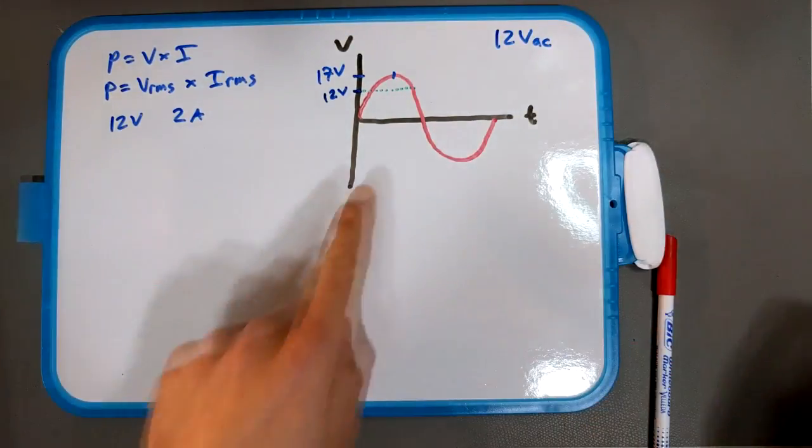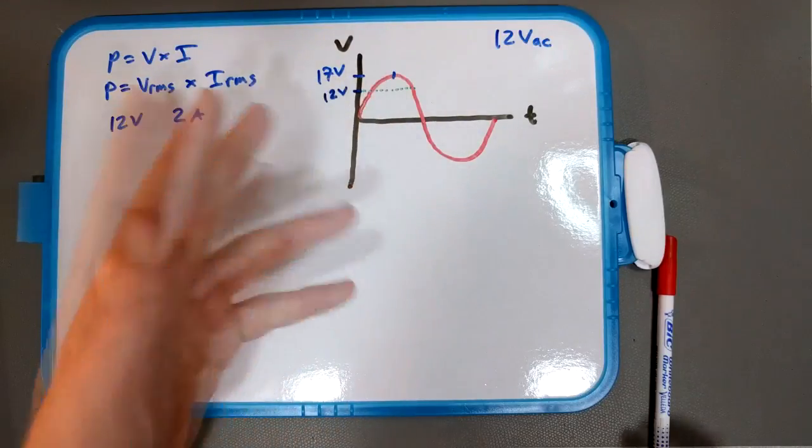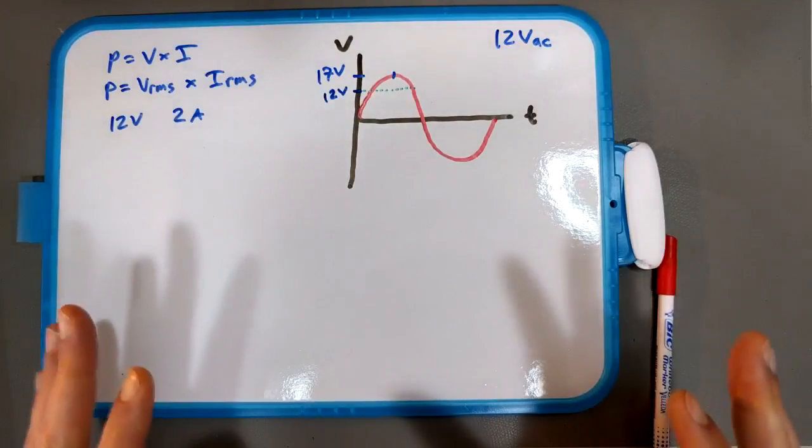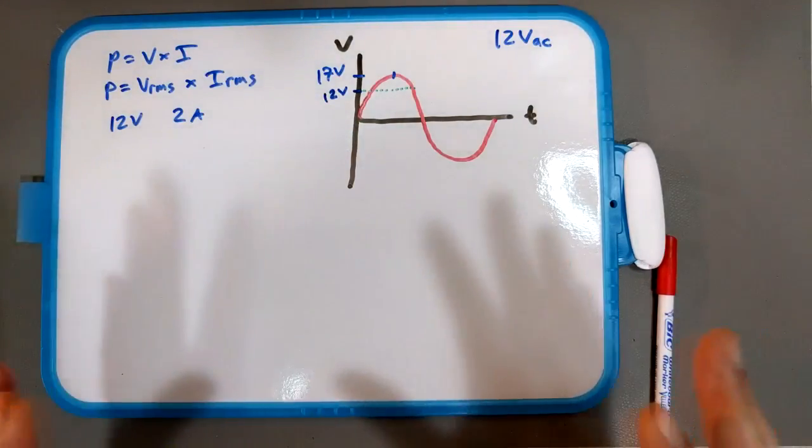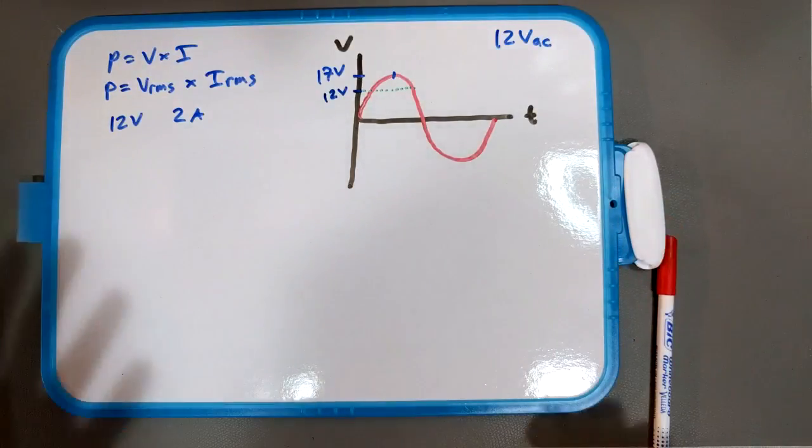12 volts is actually right about here. So what the heck is going on there? I mean, everybody thinks that if it's AC that it peaks at 12, and no, no, no, no, peaks at 17. So, 16.9 actually, but whatever. So like, okay, what the heck's going on there?